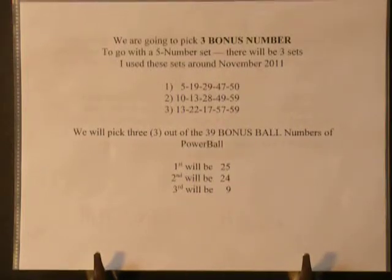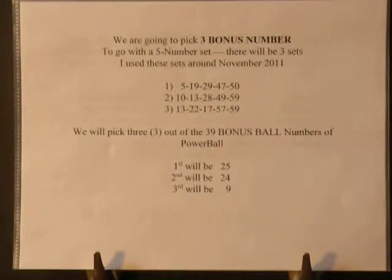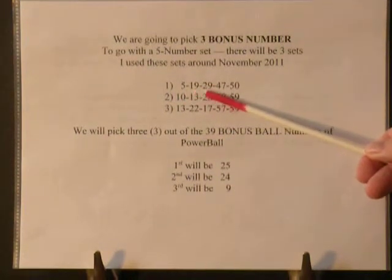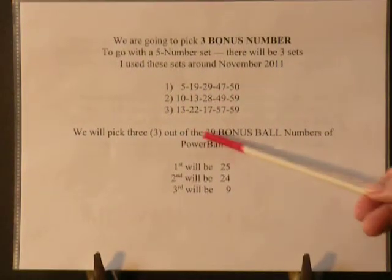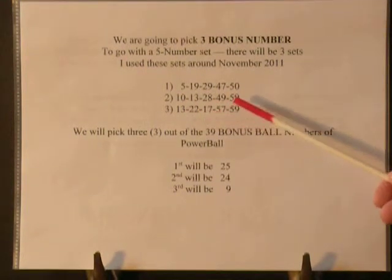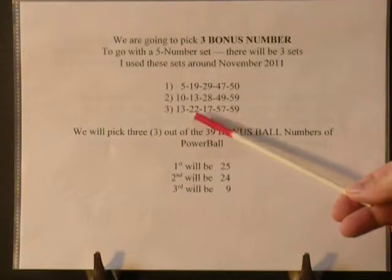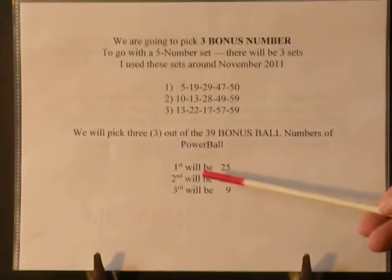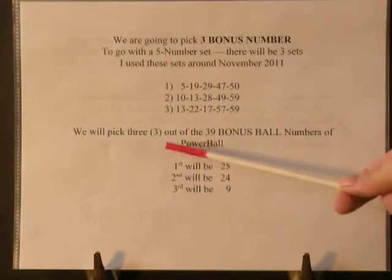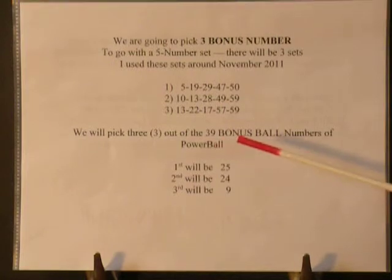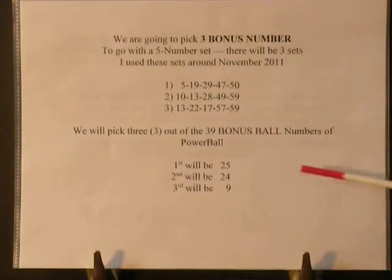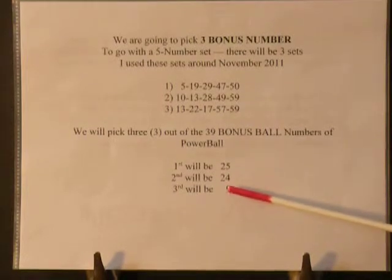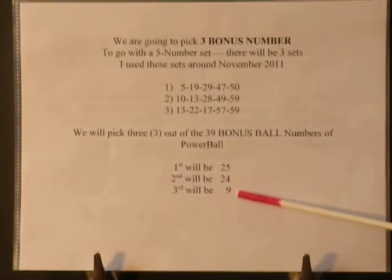We are going to pick 3 bonus numbers to go with our 5-number sets. There will be 3 sets — I use numbers from around November 2011. The first set is 5, 19, 29, 47, 40. The second is 10, 13, 28, 49, 59. The third is 13, 22, 17, 57, 59. We have already picked our 3 bonus numbers out of the 39: the first is 25, the second is 24, and the third is 9.